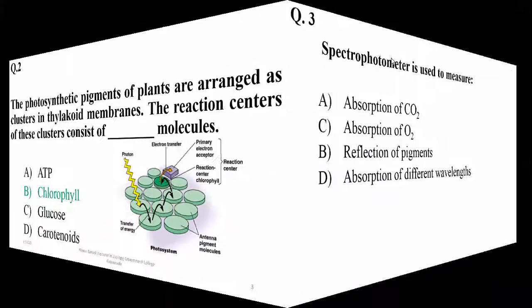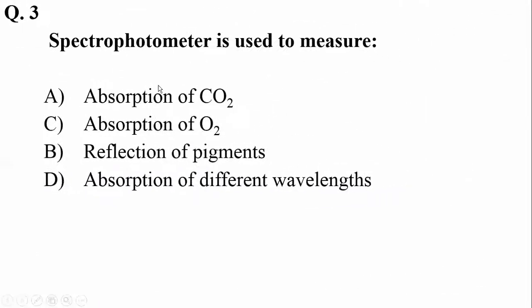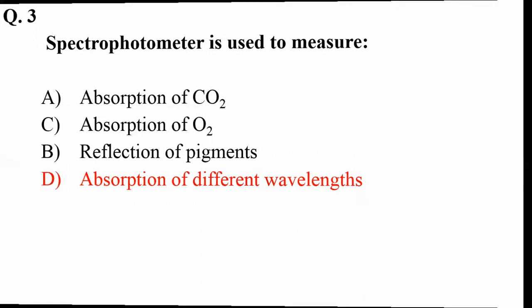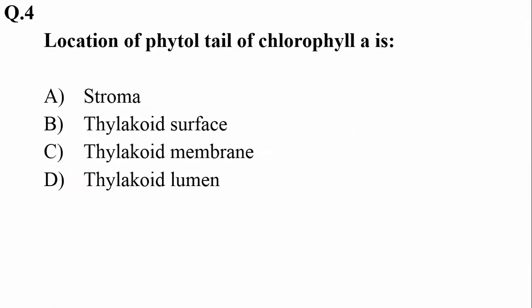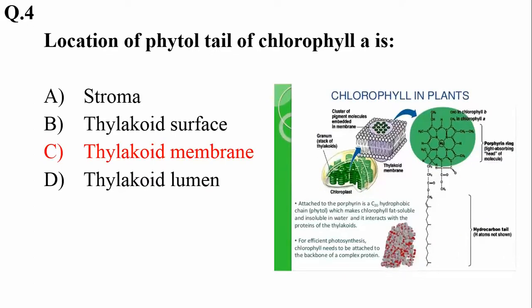Question number three: a spectrophotometer is used to measure absorption of different wavelengths of light by a pigment. The location of the phytol tail of chlorophyll a is the thylakoid membrane, instead of the lumen or stroma. As you can see, the chlorophyll a molecules have their phytol tails suspended in the thylakoid membranes.